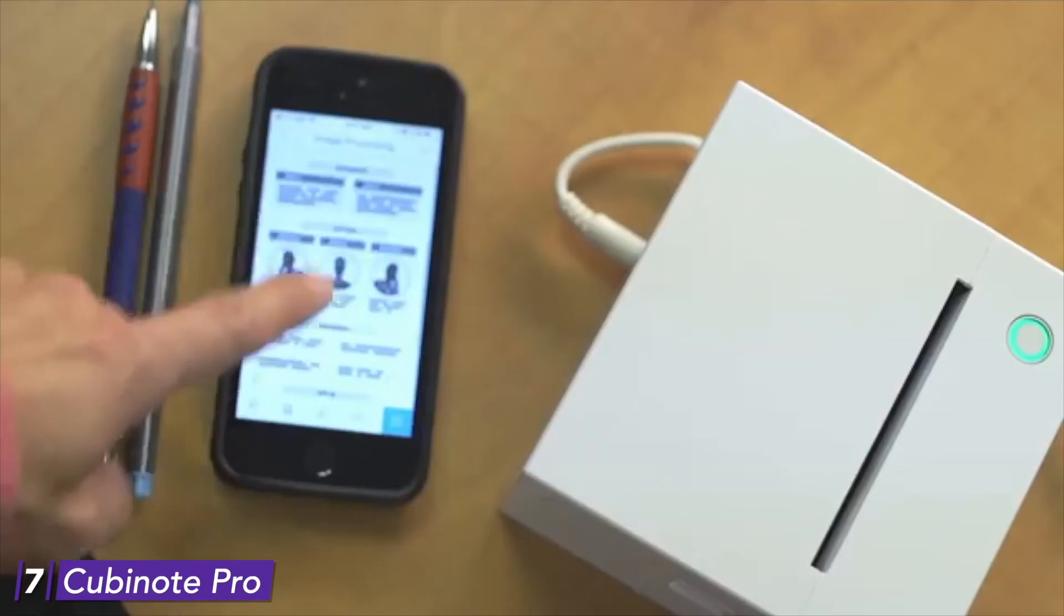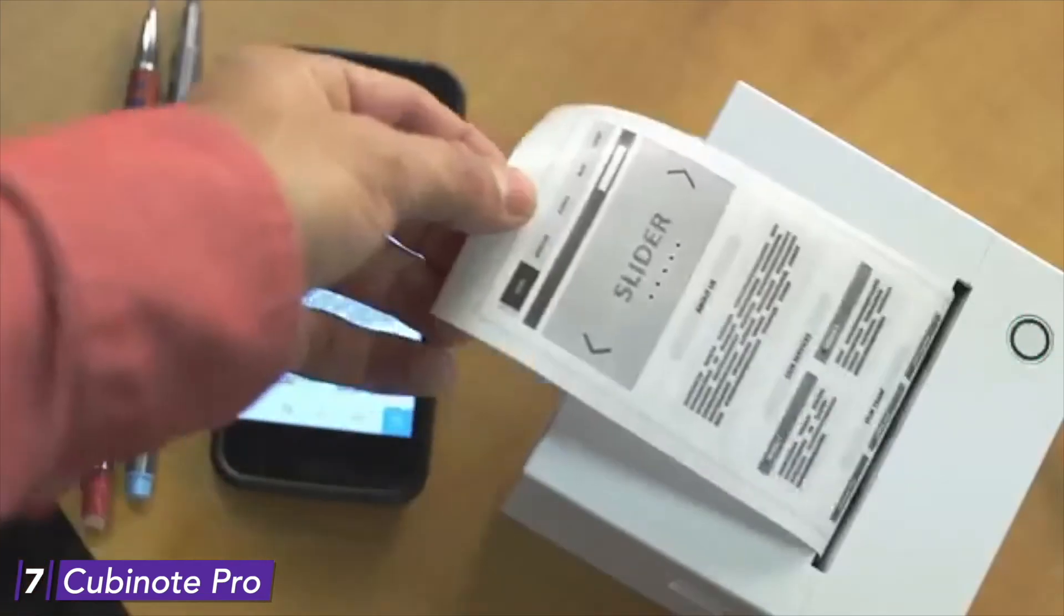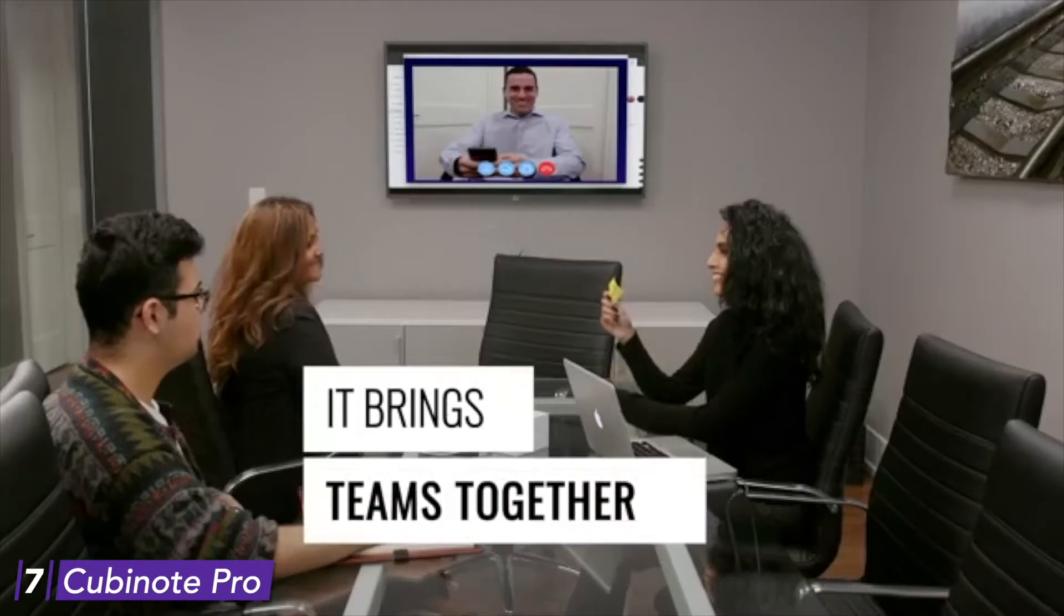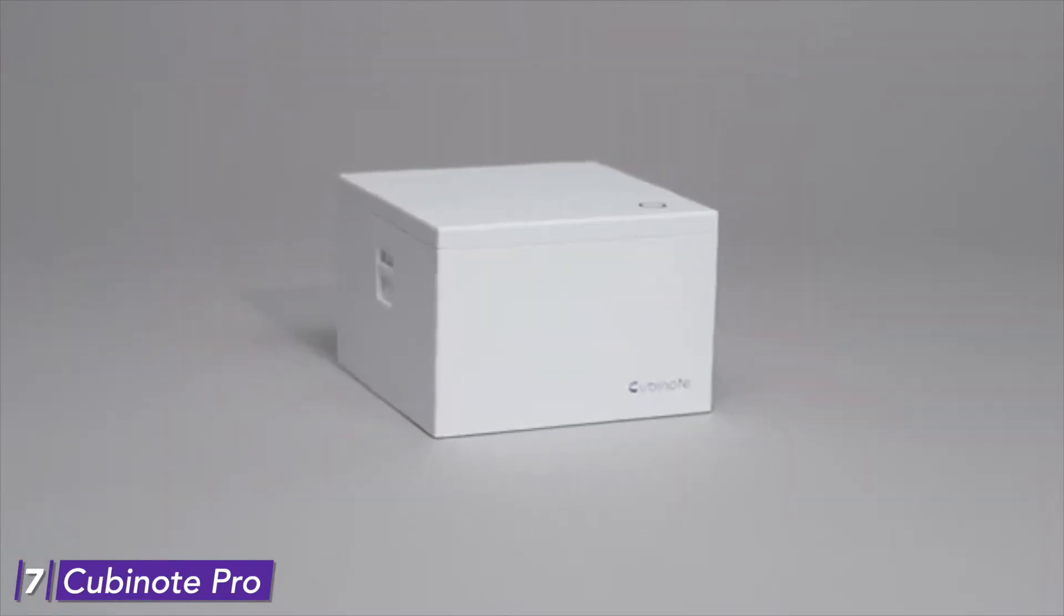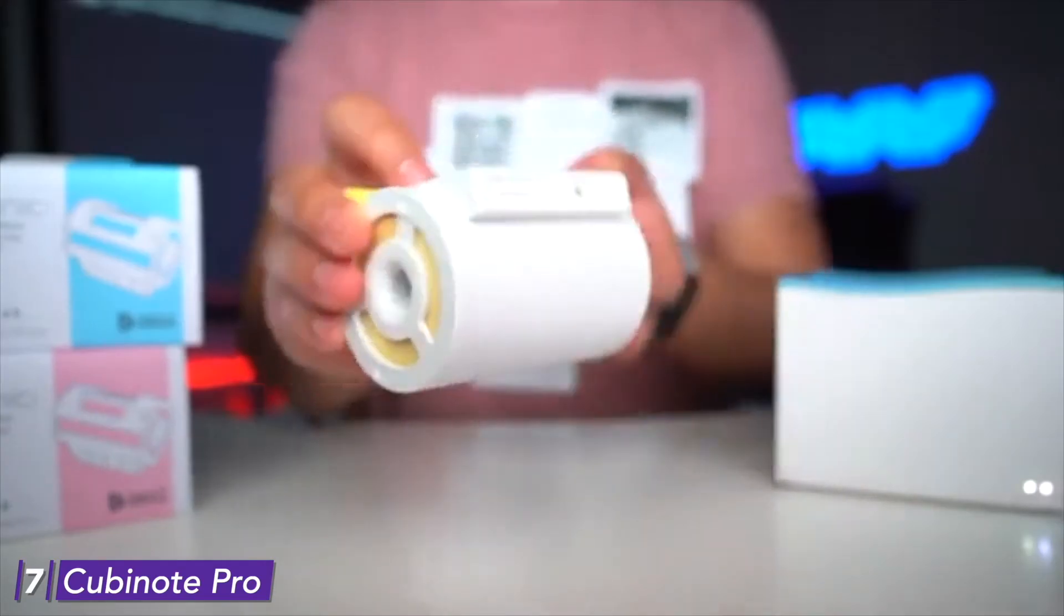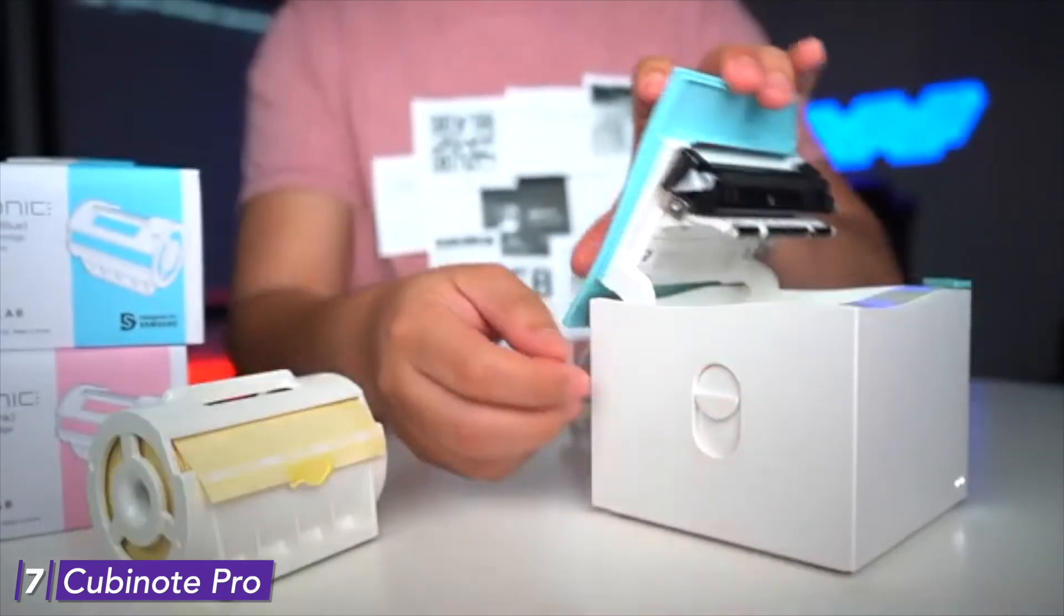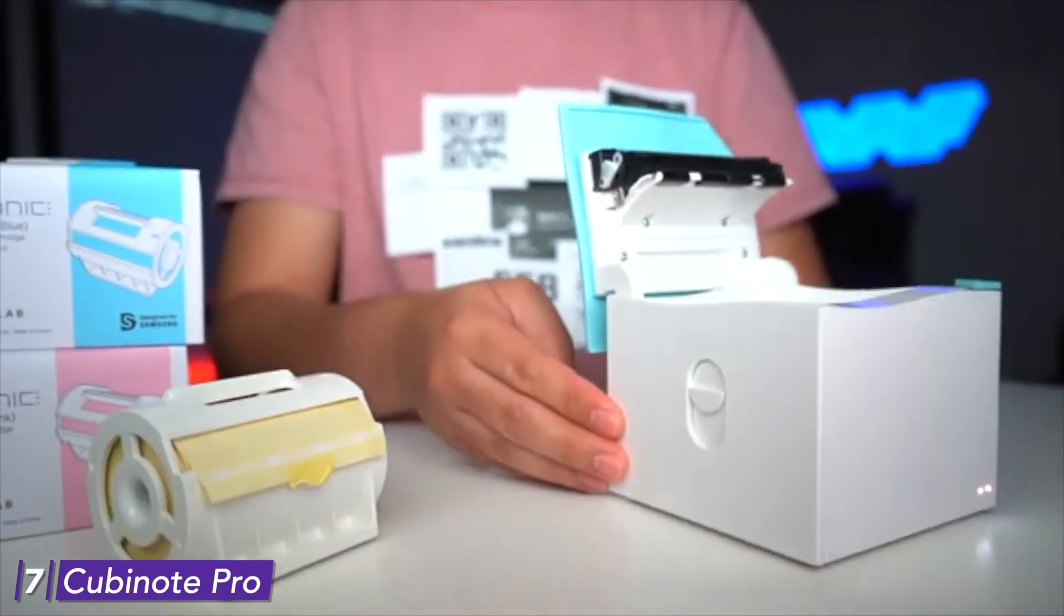Thermal papers. Cubinote Pro uses special thermal paper made with a special coating that allows printing without ink. High-quality thermal paper results are sharp, crisp, and clear without ink. It is best for printing labels. It comes in many colors that can help you organize and sort things quickly.